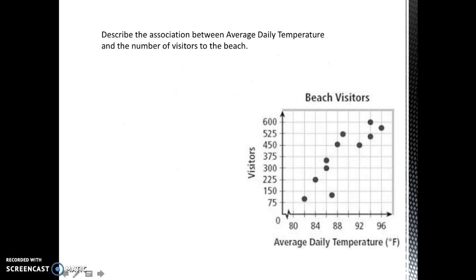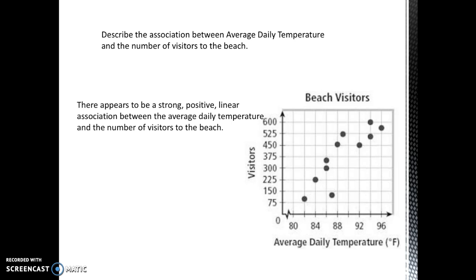Here's an example of how you should describe an association: 'There appears to be a strong, positive, linear association between the average daily temperature and the number of visitors to the beach.' Notice this description includes the strength — strong — the direction — positive — and the form — linear — and it also includes context.